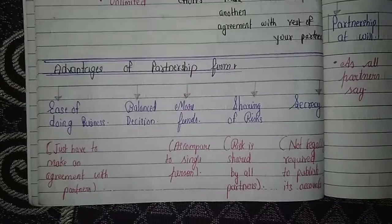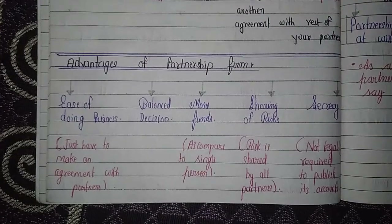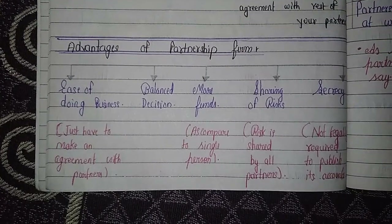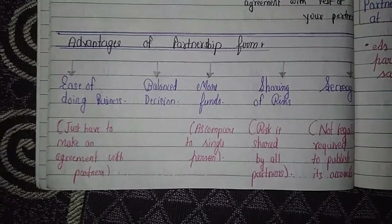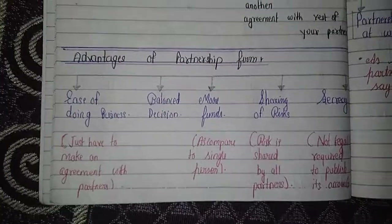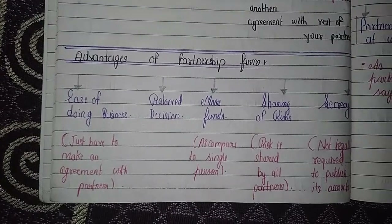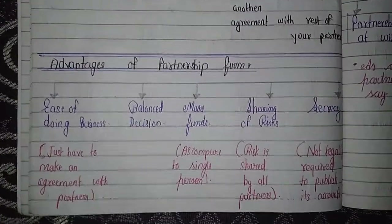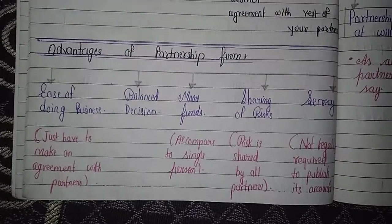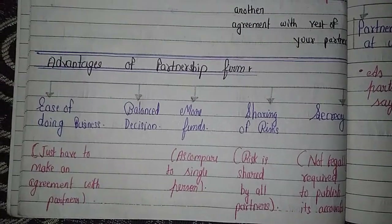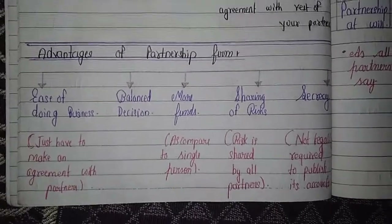The advantages of a partnership firm are: first, ease of doing business — you just have to make an agreement with your partner. Second, balanced decision-making — since many people think over a particular task, there will be more balanced decisions. Third, more funds — as compared to a single person, in a partnership firm almost 100 people can contribute their funds, so capital is greater.